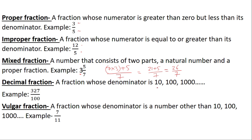Whenever we get an answer as an improper fraction, we have to convert it to a mixed fraction. Decimal fraction: a fraction whose denominator is either 10, 100, or 1000. Vulgar fraction: a fraction whose denominator is a number other than 10, 100, or 1000 — for example, 7 by 11. Whenever the denominator is 10, 100, 1000, or 10,000, it is called a decimal fraction; every other fraction is called a vulgar fraction.